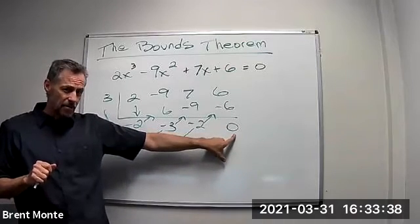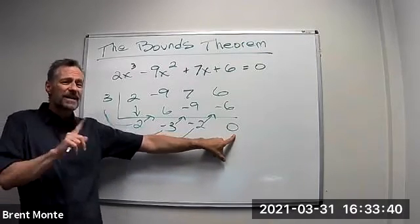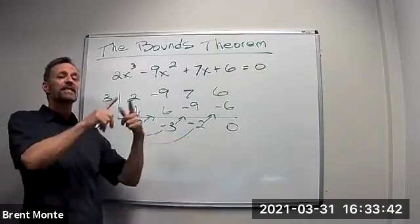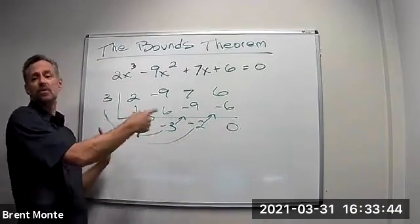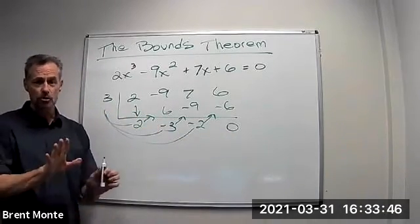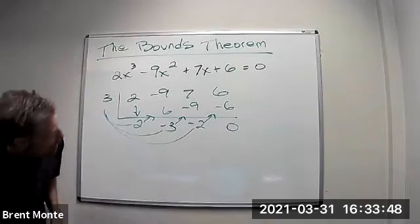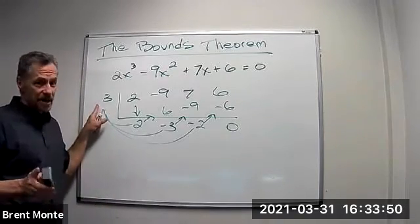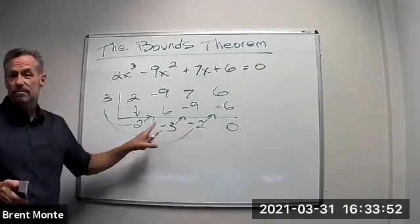Anytime you get zero down in the bottom, you can use it as positive or negative to help with either of the alternating signs or positives on the bottom. You can use it either side. So I know three is not an upper bound because these aren't all non-negative.